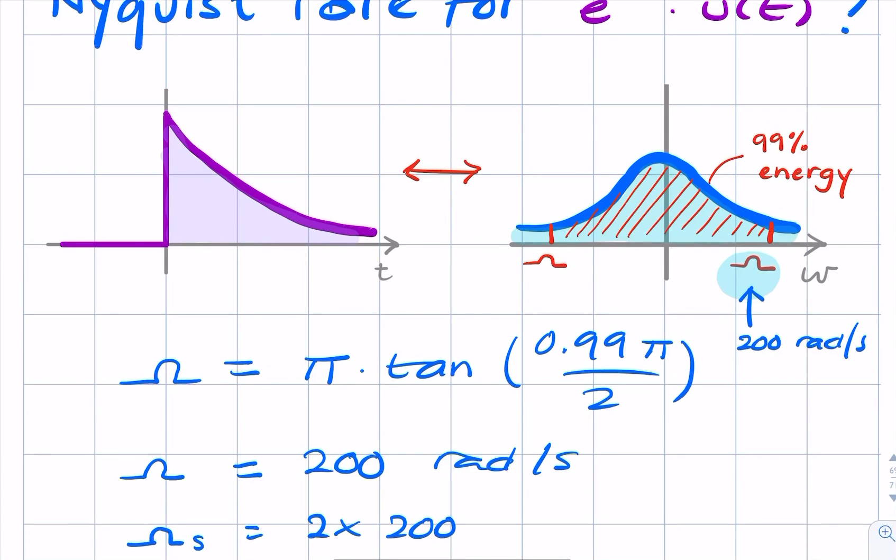Or maybe I shouldn't have called it the sample rate. Let's call it the Nyquist rate, which is the minimum sample rate. It will be 400 radians per second.